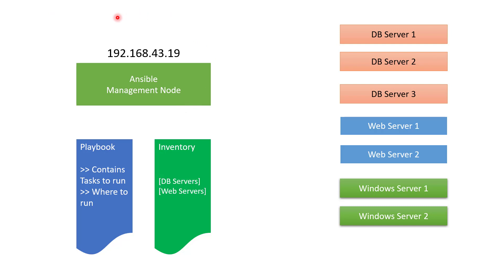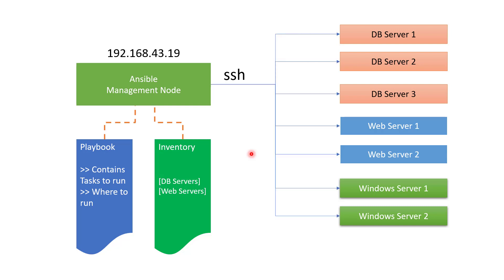The Ansible component runs on a server which is typically called the control node or management node. You create a playbook and you also create an inventory. The playbook contains tasks to be run and also specifies where to run those tasks. System information — for example, server information and how to connect to it — is provided in an inventory file. The Ansible management node uses playbooks and inventory together and then runs the commands on the target servers.